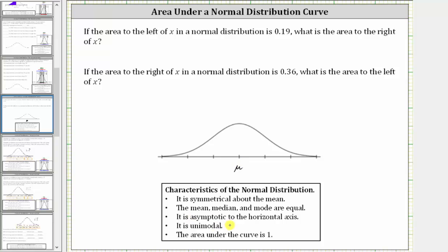It is asymptotic to the horizontal axis, meaning the graph approaches the horizontal axis. It is unimodal, meaning it has one peak. And for these questions, the most important characteristic is that the area under the curve is one.